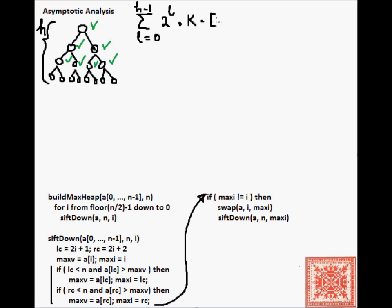We have to go h-l. Technically, that is h-l-1, because we don't have to work on the leaf level. But, to make this summation nicer to work with, we can just assume that it's h-l.